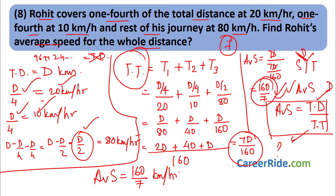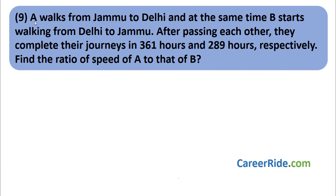Question 9: A walks from Jammu to Delhi and at the same time B starts walking from Delhi to Jammu. After passing each other, A completes the journey in 361 hours and B completes the journey in 289 hours. Find the ratio of speed of A to speed of B. The normal method would be very complicated here, so we use a special easy formula.